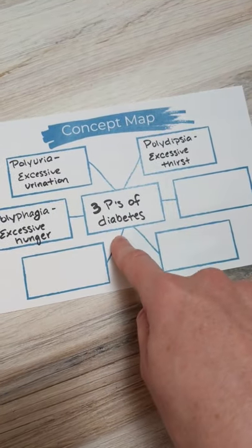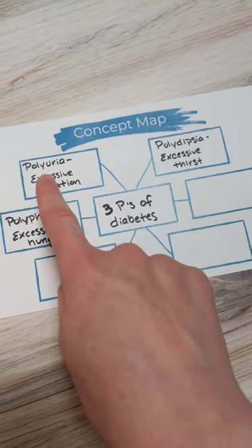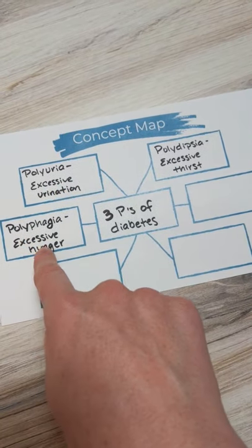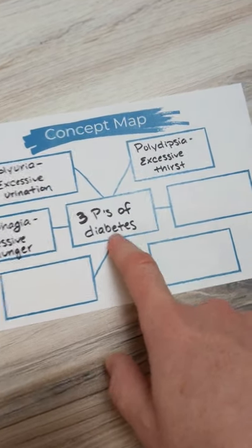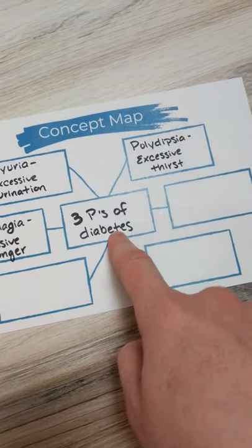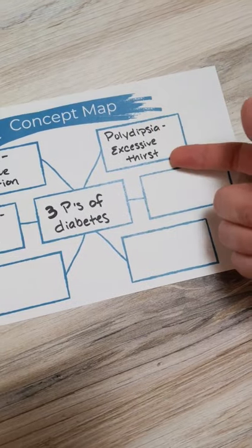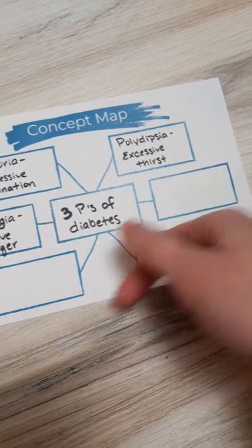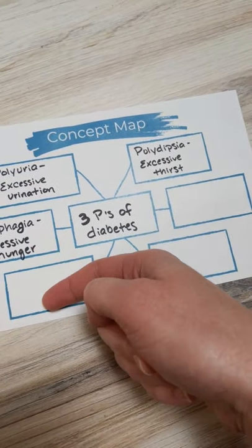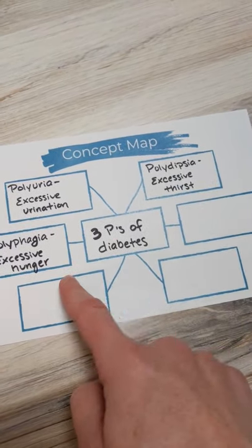So the three P's of diabetes are polydipsia, polyuria, and polyphagia. If you are studying something for med-surg, the med-surg topic would go here, then you could talk about signs and symptoms, the pathophysiology, nursing assessment, and nursing interventions.